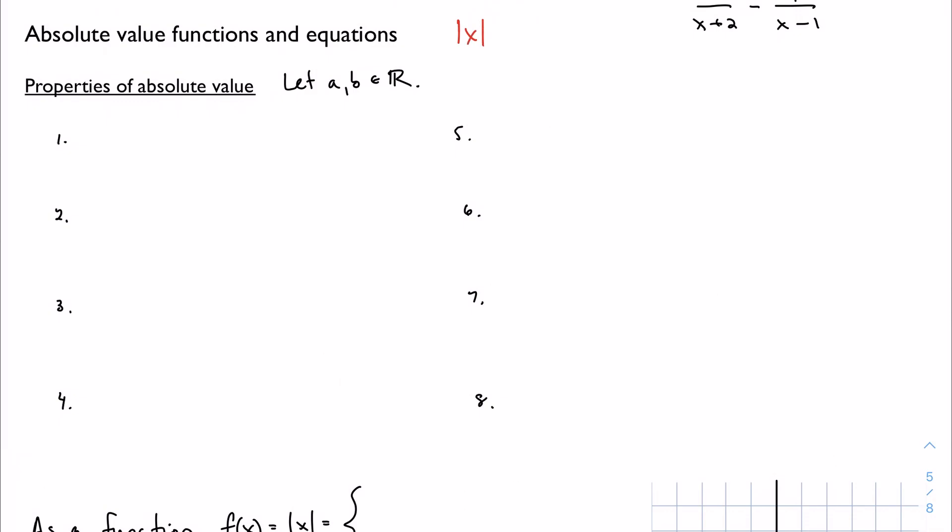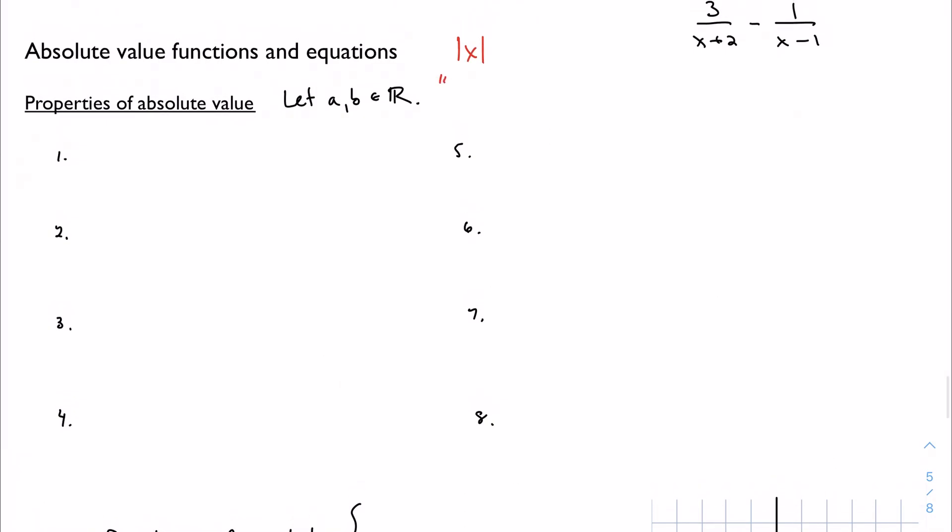We have this symbol, and sometimes IB will call it the modulus, but it's really just a measure of distance from zero. Which is why it's always positive, and that's our first property here. The absolute value of some number will always be positive because it talks about distance, and distance can't be negative.